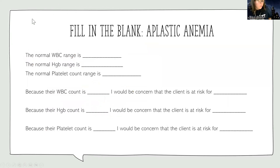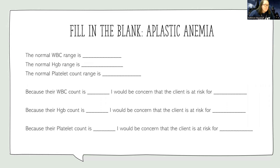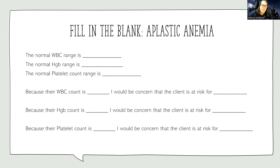Let's do a fill-in-the-blank. With iron deficient anemia the main problem is low hemoglobin and oxygenation issues, but with aplastic anemia we have three separate problems. The normal white blood cell range is about 5,000 to 10,000 — in aplastic anemia it will be lower, usually less than 5,000. Normal hemoglobin is roughly 12 to 18, and normal platelet range is about 150,000 to 400,000 — in aplastic anemia we'll see less than 150,000 platelets.